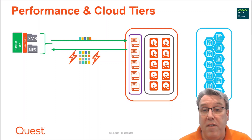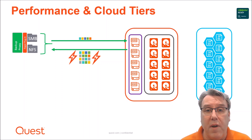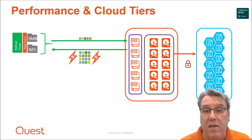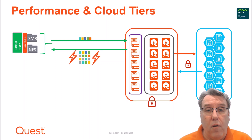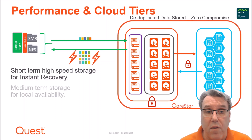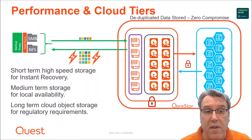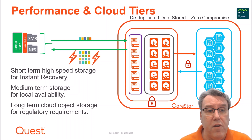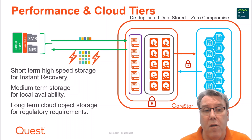When the cloud tier is in use and data sets are pushed out there, when we want to restore things we look at the data sets we have locally first, and if we need to fill any gaps we just pull that from the cloud tier — so we're only filling in where we need to, which reduces egress costs as well. All of this data can be encrypted at rest — the data held in the cloud tier, in the performance tier, and in the normal storage tier can all be encrypted. So effectively you get short-term high-speed recovery for instant recovery, medium-term storage for local availability, long-term object storage for regulatory requirements, all in a single solution.